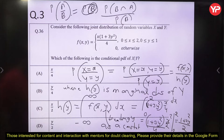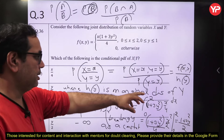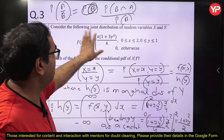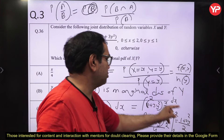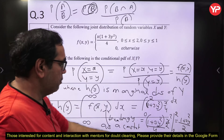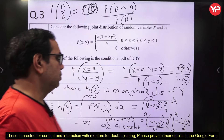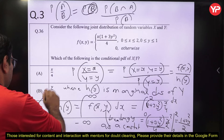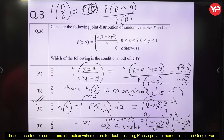Now the conditional PDF of X given Y equals f(x,y) / h(y) = (x/4)·(1 + 3y²) divided by (1 + 3y²)/2. The (1 + 3y²) terms cancel, giving (x/4) / (1/2) = x/2. So the conditional PDF of X given Y is x/2, which is option C. The dependence on Y disappears entirely.